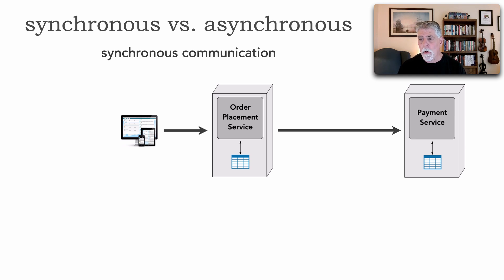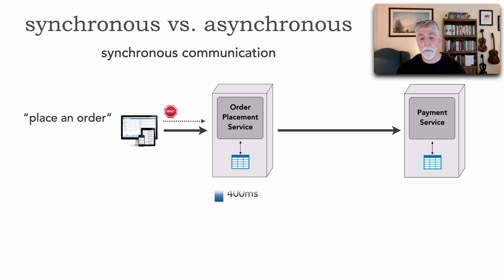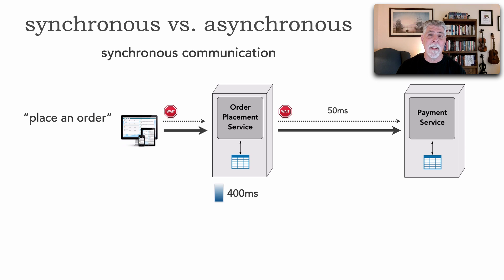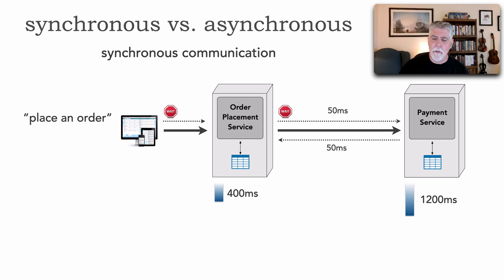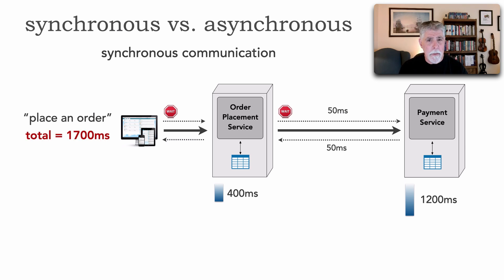If I've got my order placement and payment and I'm using synchronous calls, if I place an order I have to wait. It comes into the order placement service — it takes 400 milliseconds to place the order, then 50 milliseconds in network latency to get over to the payment service, which takes 1,200 milliseconds to apply the payment, then another 50 milliseconds back. Adding all this up, including latency, we get around 1,700 milliseconds.